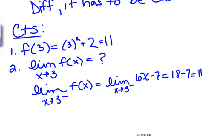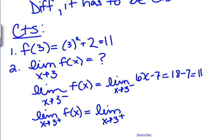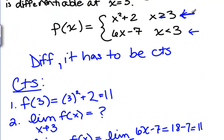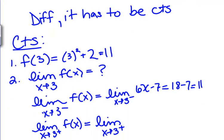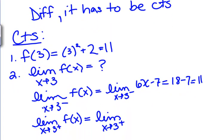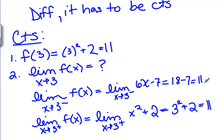Now we look at the limit as X goes to 3 from the right, using the top function because that's where we put things bigger than 3. Note that in this particular problem we're using the same function for the equals and the bigger-than case, but it's totally possible to have a piecewise function with one value defined at 3, a different value for bigger than 3, and a different value for less than 3. So we have X squared plus 2 again, which is 3 squared plus 2, which is 11.